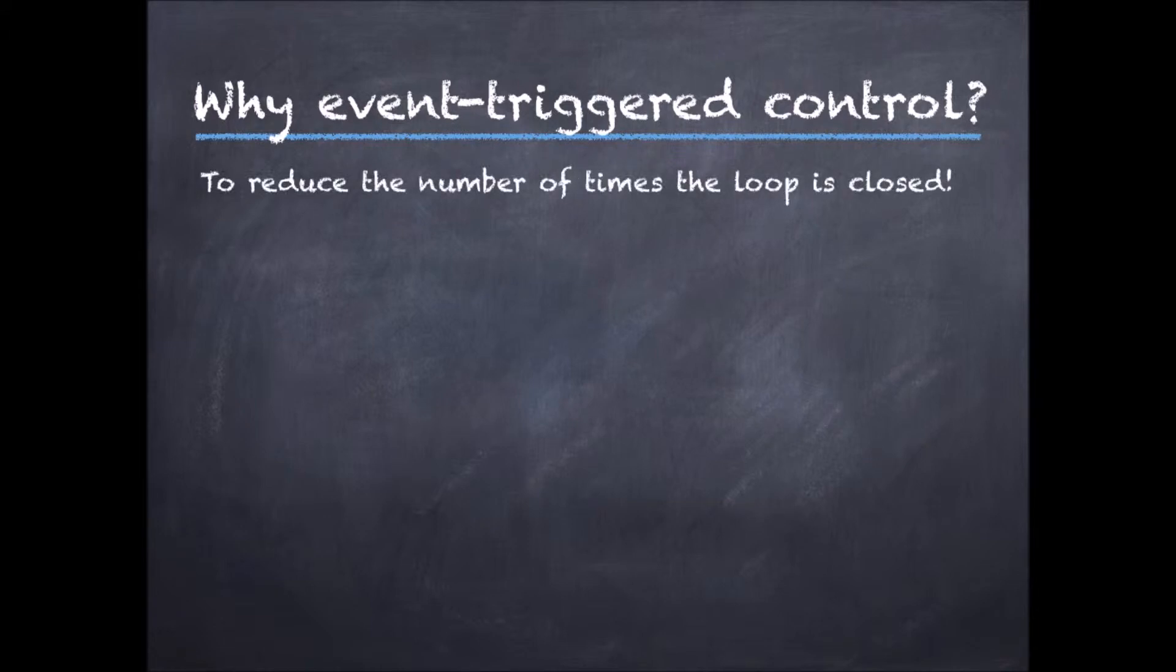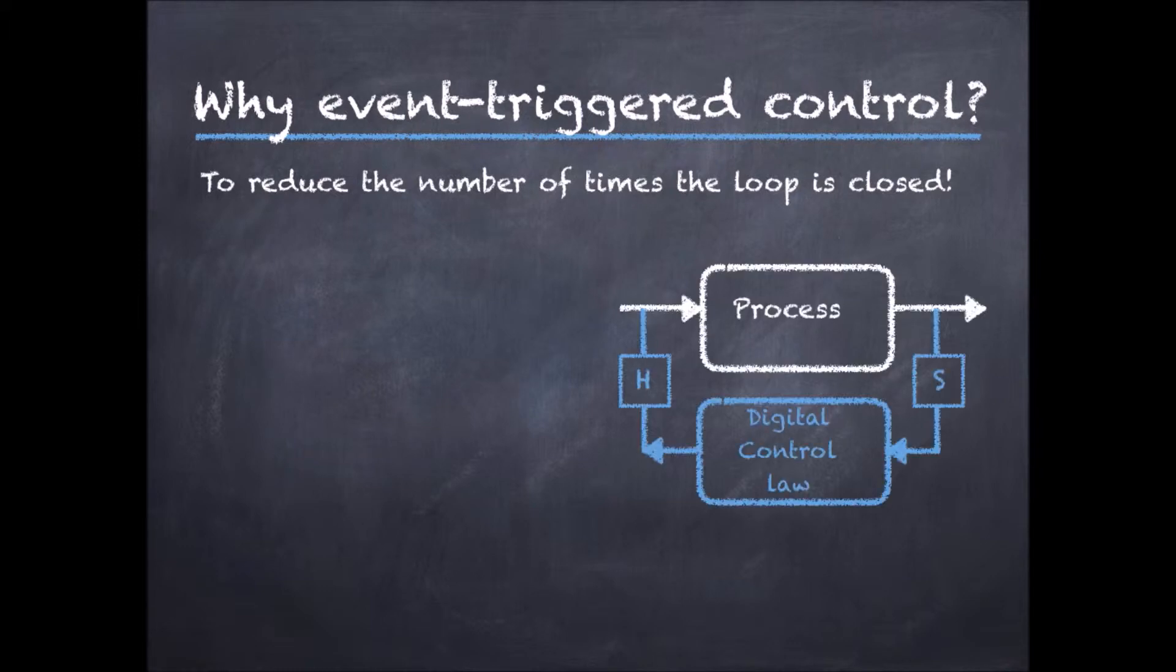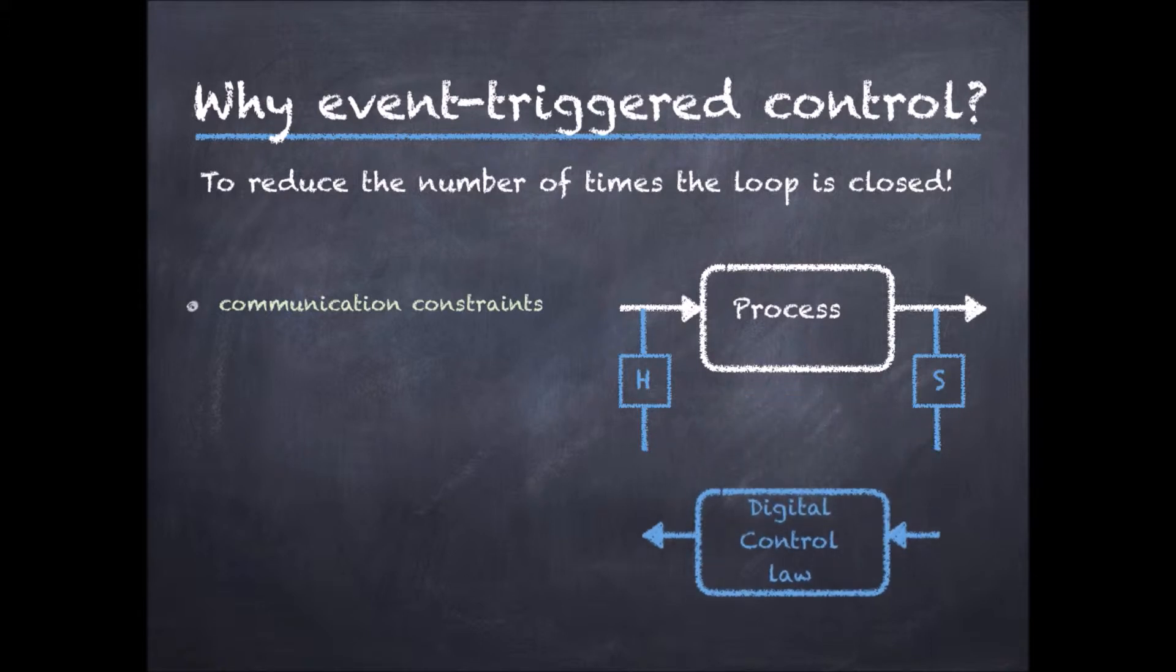And this may happen in at least three contexts. First, we might have communication constraints. The processing controller might be physically distributed, and we might have bandwidth constraints. For instance, we might be controlling an autonomous submarine over an acoustic emission link, limiting the number of times per second we can transmit data.